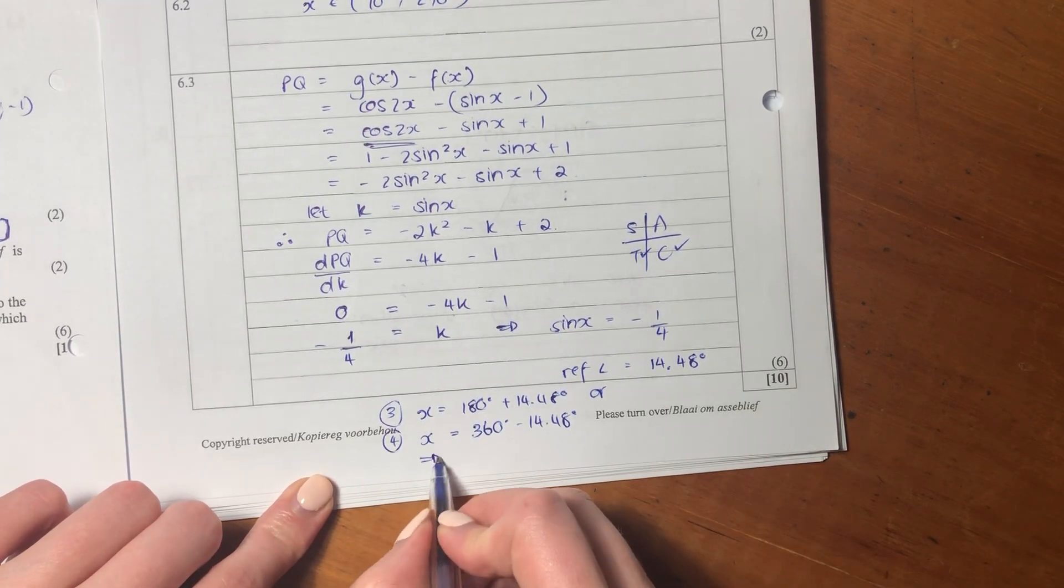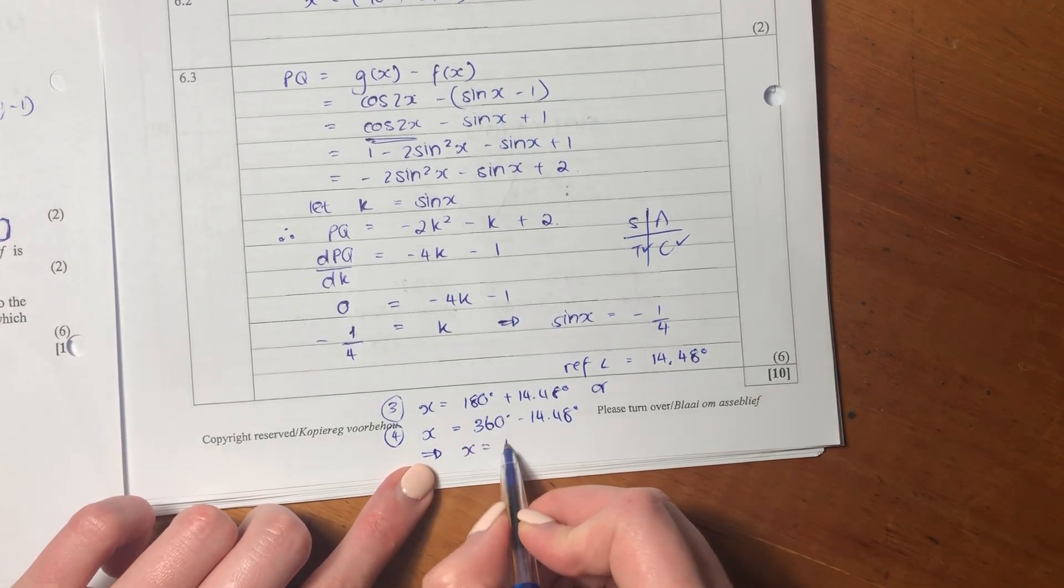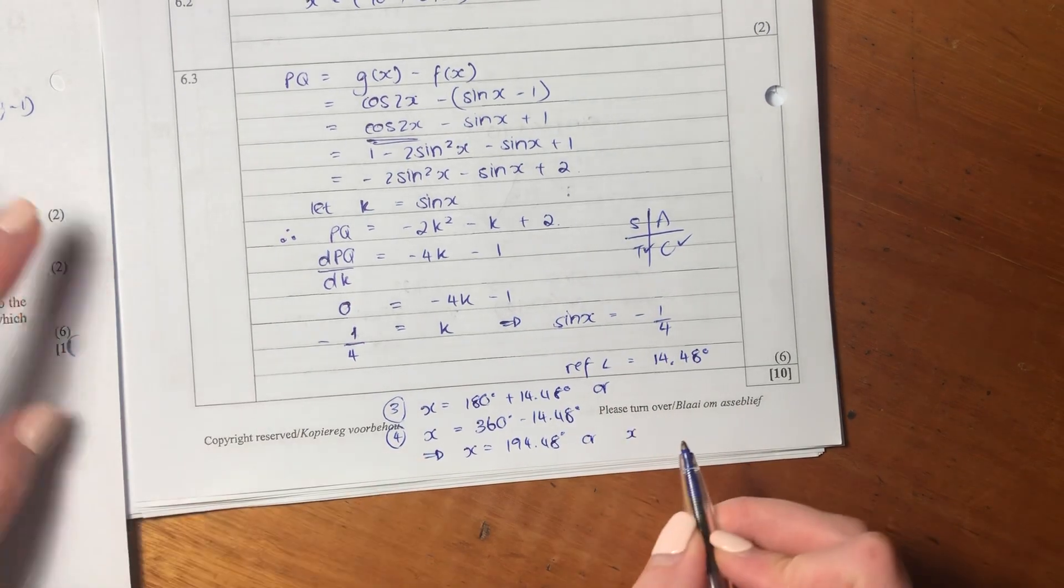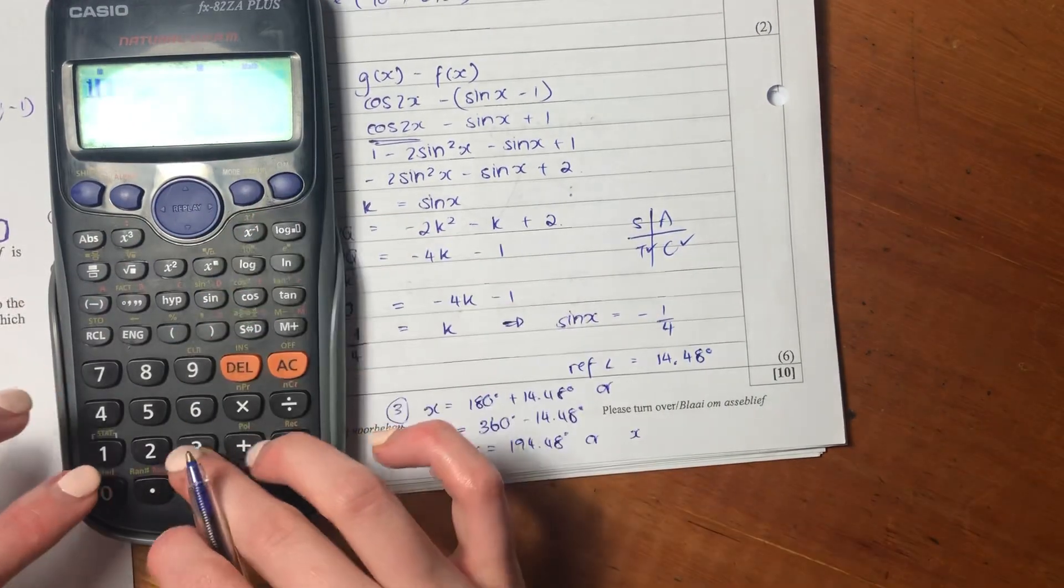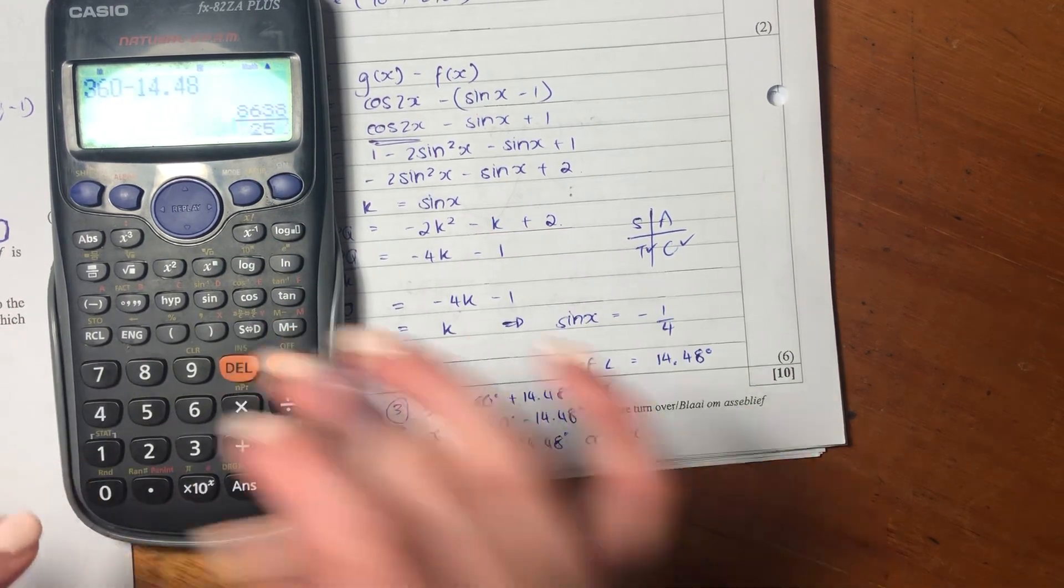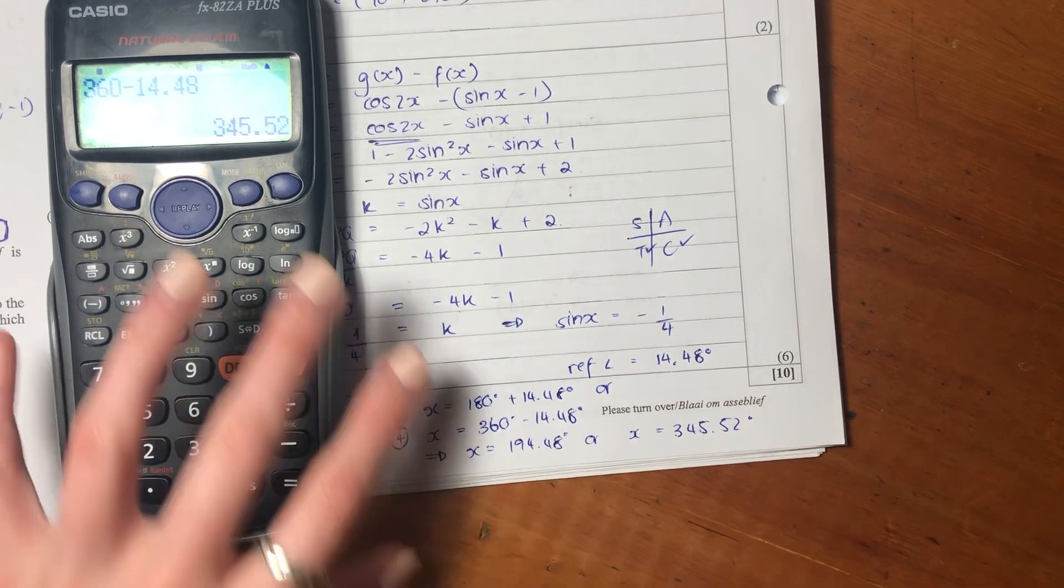So let's just write our final answer here. So x is going to equal 194.48 degrees or x is going to equal, let me just do that in my calculator, it's going to equal 345.52.